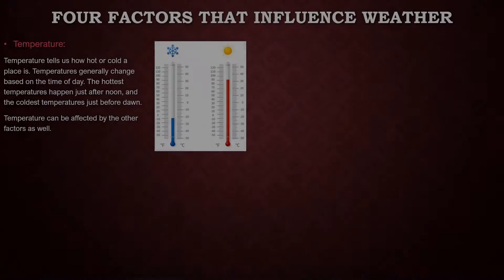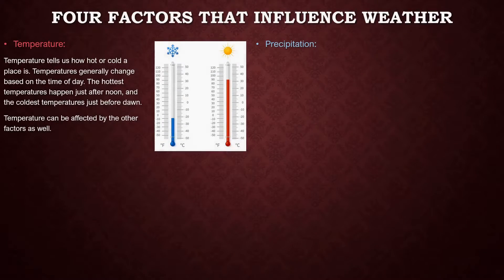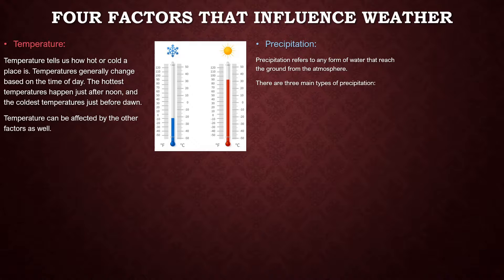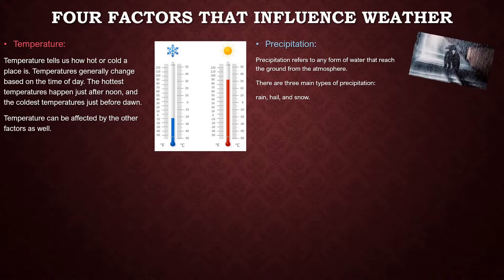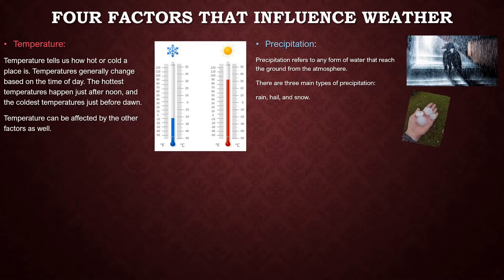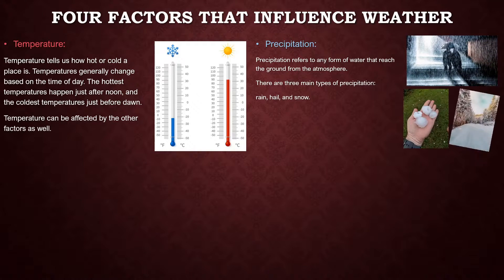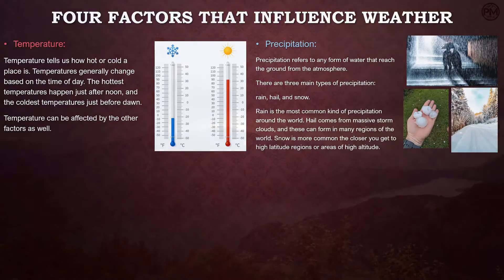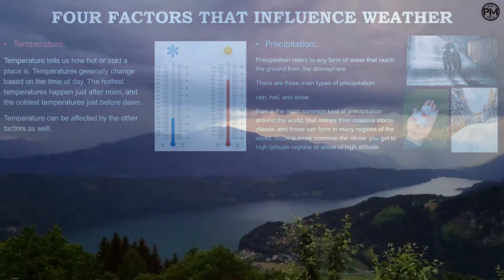Precipitation refers to any form of water that can reach the ground from the atmosphere. Precipitation that affects weather the most comes in three main types: rain, hail, and snow. Precipitation can also occur in the form of frost and dew, but we won't be discussing those in this video.